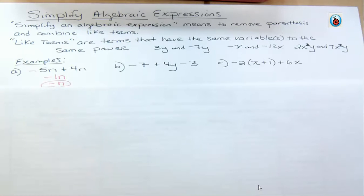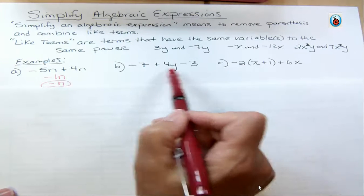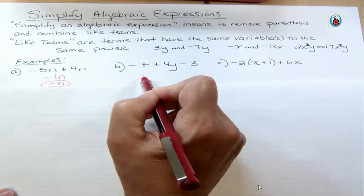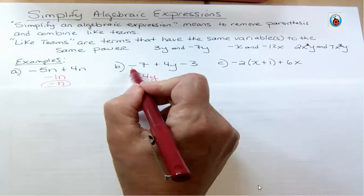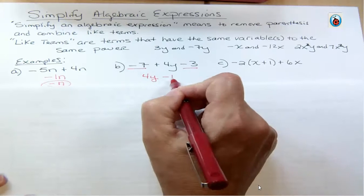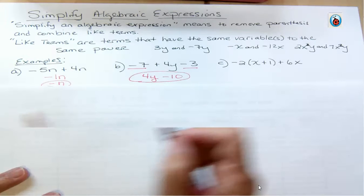In the second example I have three terms. 4y is the only term with a y, so there's no like term to combine it with — that stays as 4y with its positive sign. But −7 and −3 are like terms; they're just constants. I have seven negatives and three more negatives for a total of ten negatives, so that gives −10. I can't combine 4y and −10 because one has a variable and one doesn't — they must have the same variable to the same power.